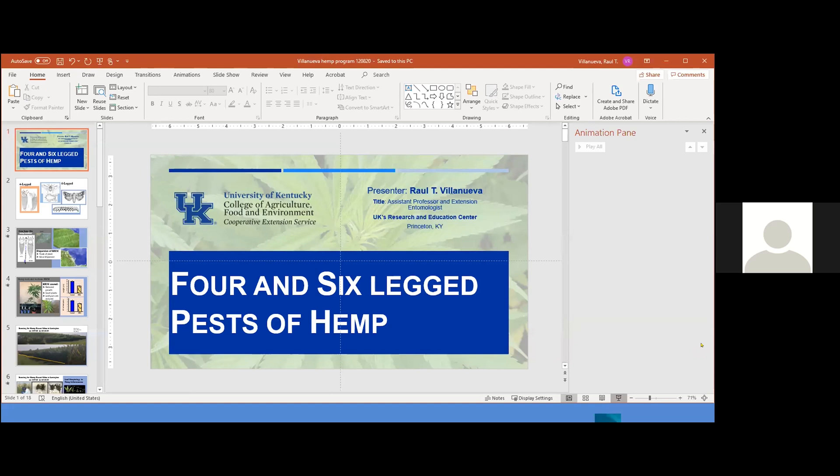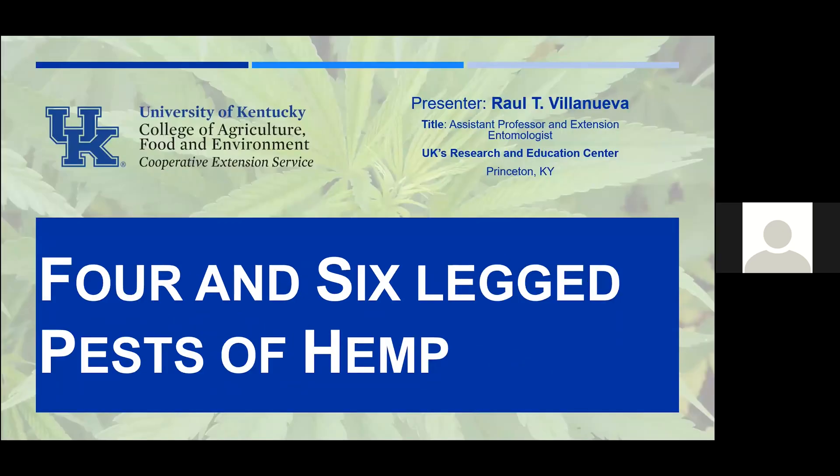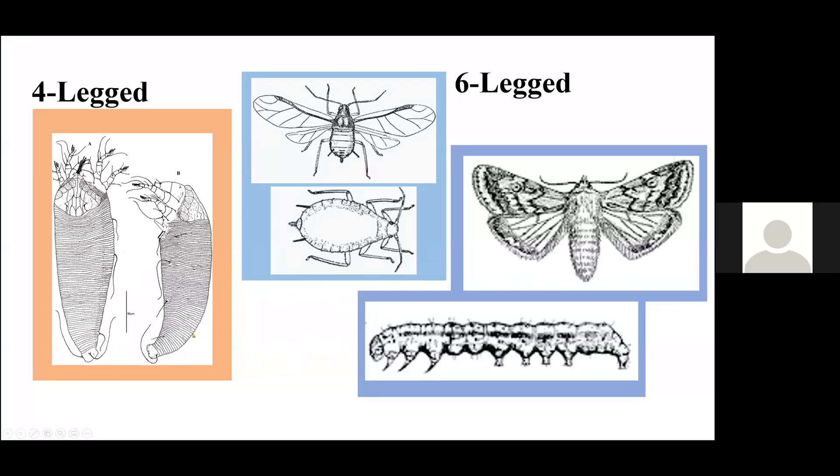Today I'm going to talk to you about the four- and six-legged pests of hemp, and I'm referring specifically to hemp russet mites, aphids, and corn earworm.